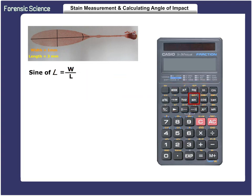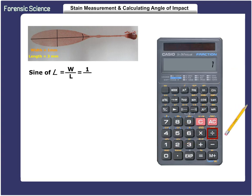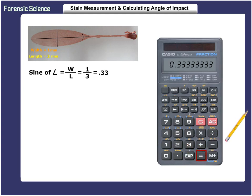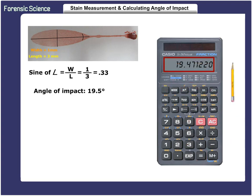After you turn on the calculator, enter the width of 1 millimeter, and then divide that by 3 millimeters — the length. This will equal 0.33, which is the sine of the angle. Push the inverse button, followed by the sine button, which will then give you the angle of impact: 19.5 degrees. It is that simple, but you must use a scientific calculator with the functions listed above to make it this easy.